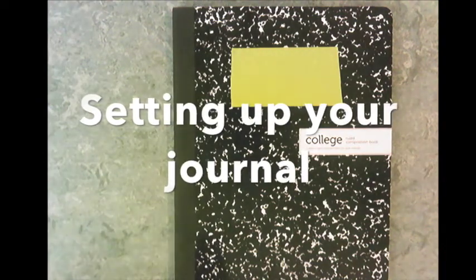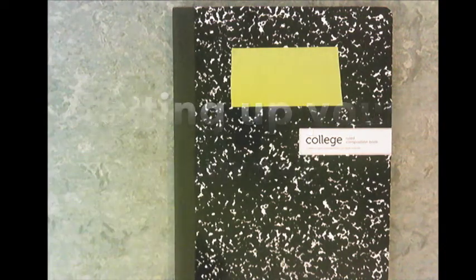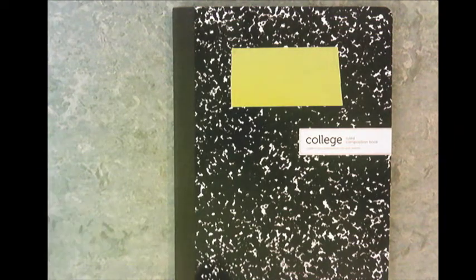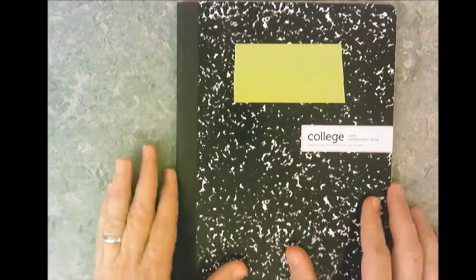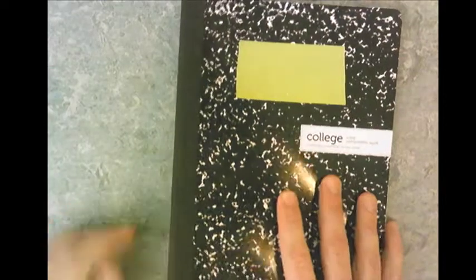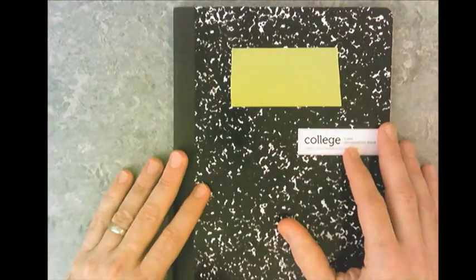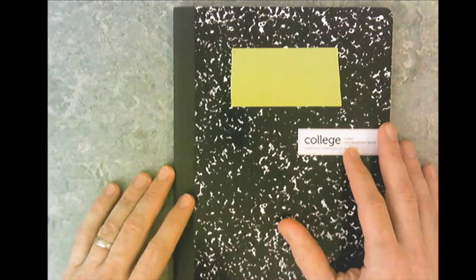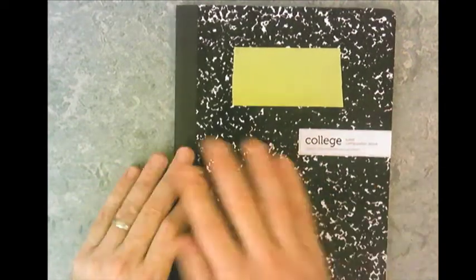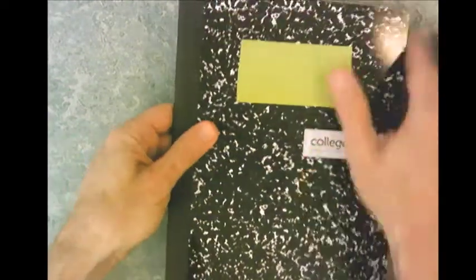Welcome to Geometry. The first thing we need to do is set up a geometry journal. You need to get a bound journal similar to this one. It's going to cost you two dollars or maybe a little bit less. I don't care what color or what type - there are hardbound options.